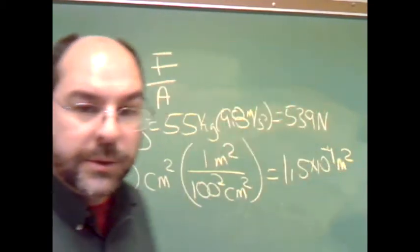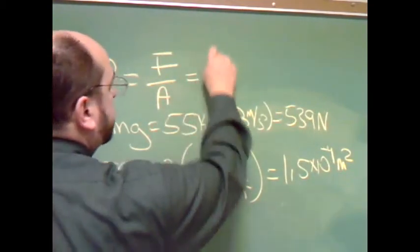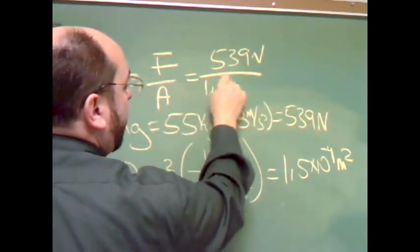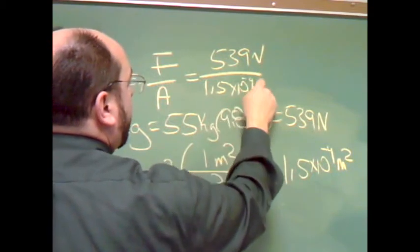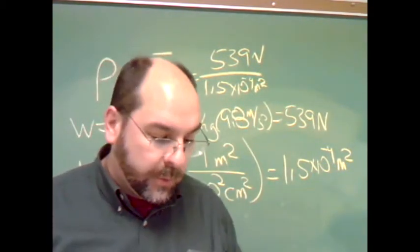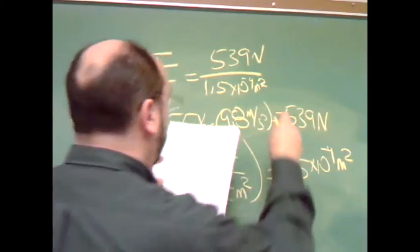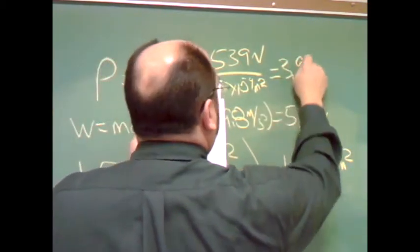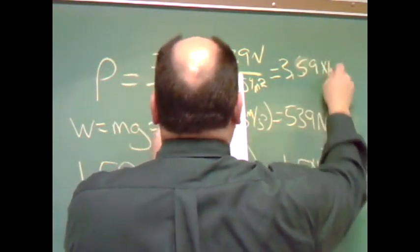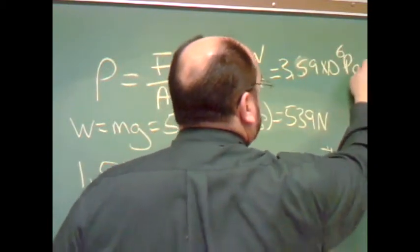So we just put them together now. Pressure equals force over area. The force is 539 newtons. The area is 1.5 times 10 to the negative 4 meters squared. It's a big number divided by a really small number, so we're going to get a really big number for our answer. 3.59 times 10 to the 6 pascals.